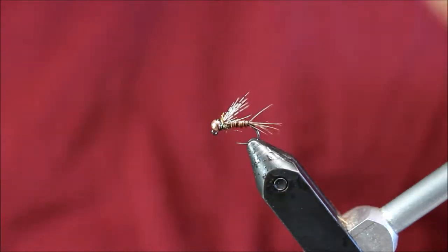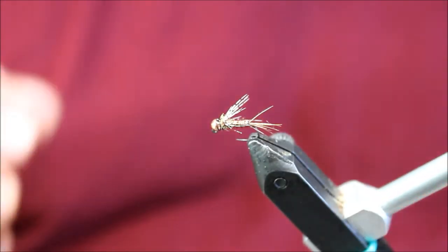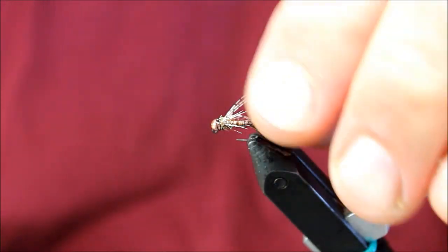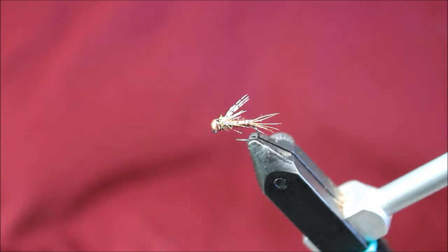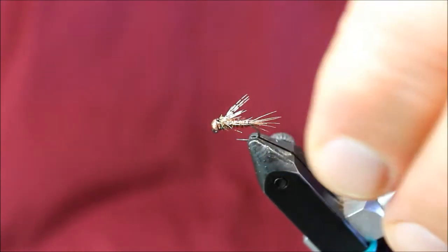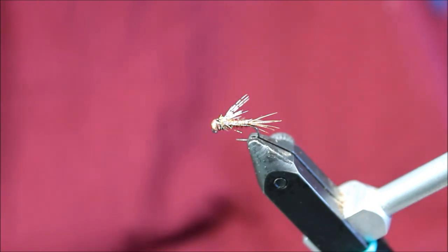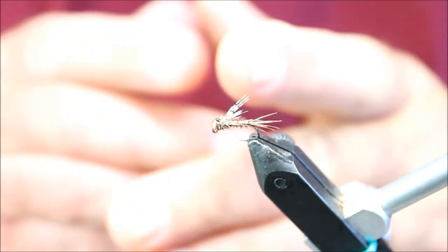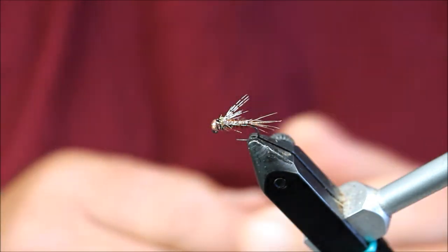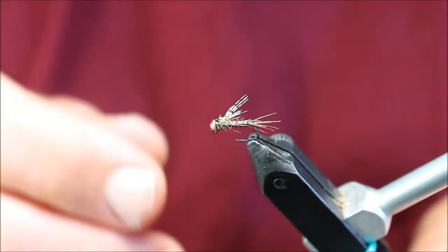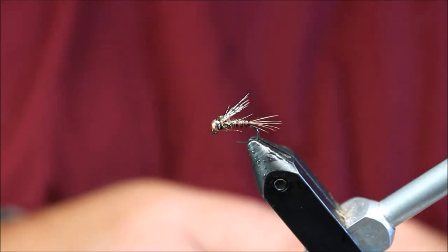Trim up the thread there and we have a size 18 soft hackle pheasant tail. Again, that feather would have extended way beyond the tail had we not done that. What you want to do is measure that hackle feather first, determine how much length you need to take off of that, and start hackling that down the hook shank that exact same length. That will remove the distance from that feather and the length that you don't want so that you can tie it appropriate to the size of the hook.